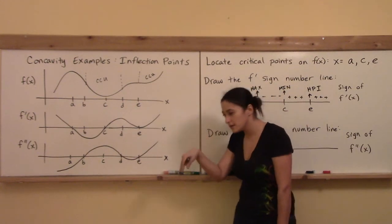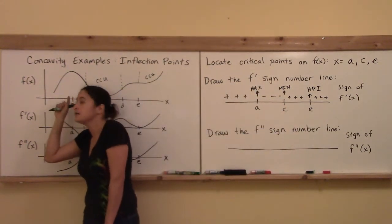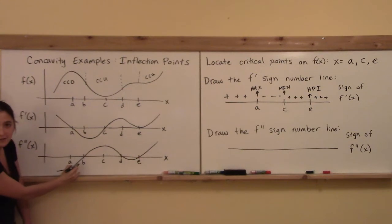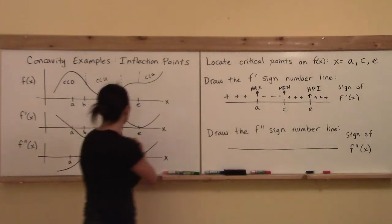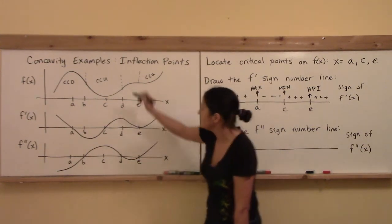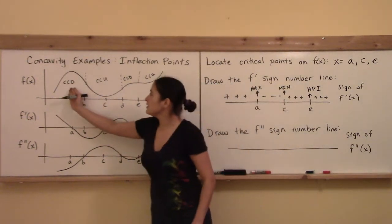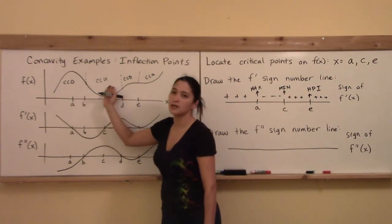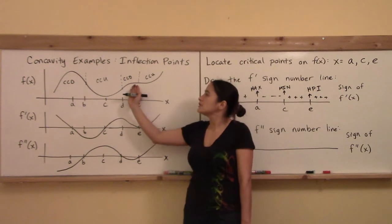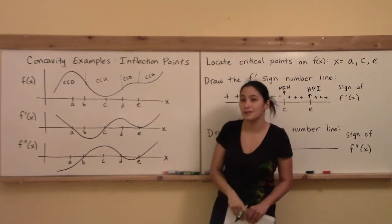Concave down is like an upside-down umbrella — if you were hiding under here, the rain wouldn't get you. That part of the graph is concave down, and the second derivative is negative there. Between D and E there's a small region where the second derivative becomes negative again — that's also concave down, though it's a little hard to see. Good thing we have the calculus.